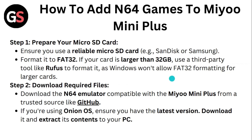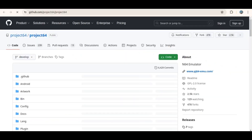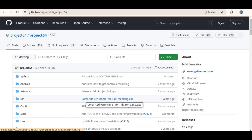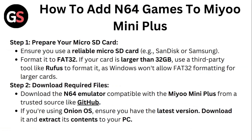Step 2: Download required files. Download the N64 emulator compatible with the Miyoo Mini Plus from a trusted source like GitHub. If you're using Onion OS, ensure you have the latest version — download it and extract its contents onto your PC.